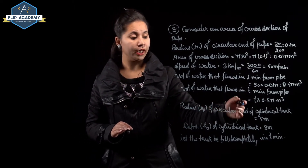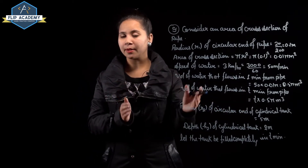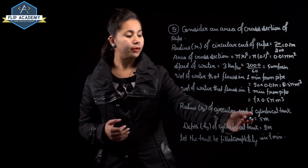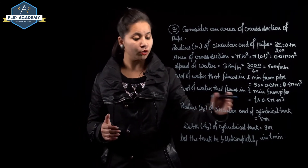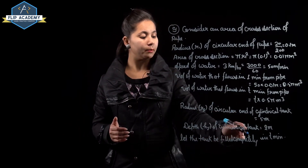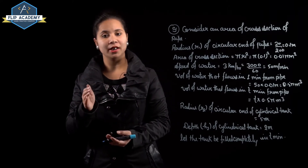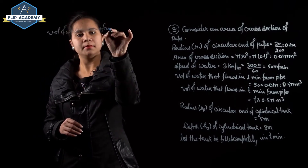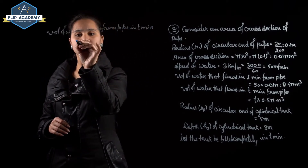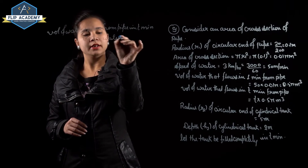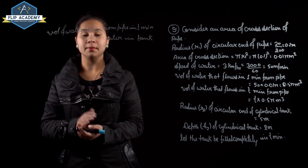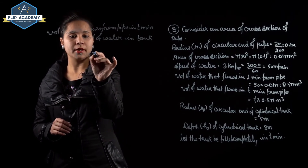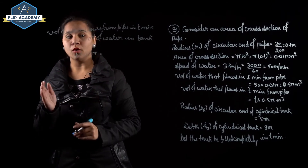Radius of cylindrical tank r2 = 5 m (since diameter = 10 m), and depth h2 = 2 m. Let the tank be completely filled in t minutes. Volume of water from pipe in t minutes = volume of tank: t × 0.5π = π r2² × h2.